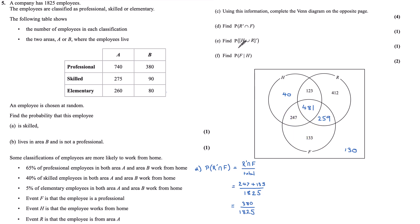Part E. I'm looking for the probability that it is not in the union of H and R. So first, let's break this down and just look at the union of H and R. How many employees either work from home or are from area A? So H or R are all of these numbers here. So 40 plus 247 plus 481 plus 123 plus 412 plus 259, 1,562 employees. So those that aren't within that union are these values here. 1,825 subtract 1,562. So 263 employees are not in that union. So the probability that you are within those who are not in the union of H or R is 263 over 1,825.